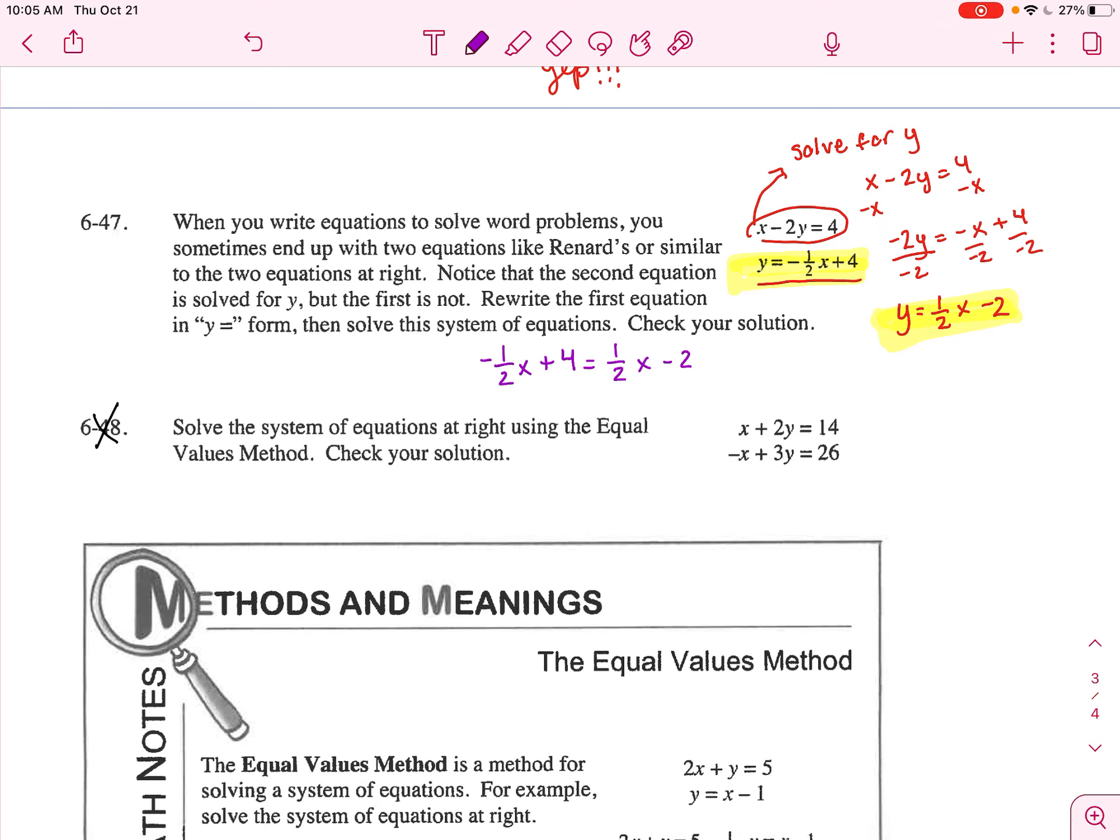I'm going to first add 1 half X to both sides. So I get 4 equals 1 half plus 1 half is just 1, 1X minus 2. Then I'm going to add 2 to both sides.